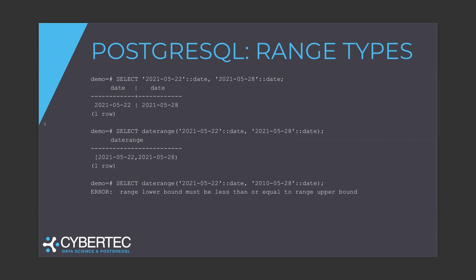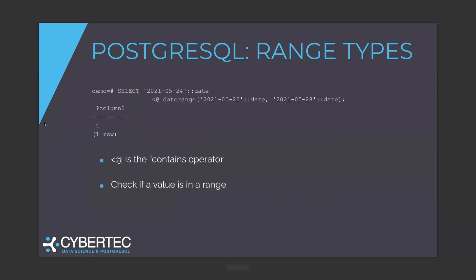That's a range type — it has been in Postgres for many, many years. Based on those range types, there are a couple of operators provided by Postgres core. For example, if you want to check if the 24th of May is part of the range going from 22nd to 28th, it returns true. There are some operators here, but it's quite easy to use and very well documented. It basically covers everything you will need in this area. This is the contains operator.